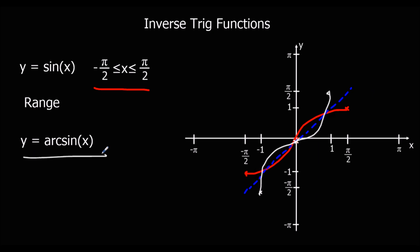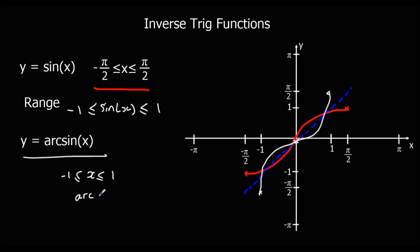And there we have our inverse function — y equals arcsine x. The range of the original function was between negative 1 and positive 1, so now for the inverse function the domain is between negative 1 and positive 1. And the range is the domain of the original, so between minus pi over 2 and plus pi over 2. The domain has become the range and the range has become the domain.